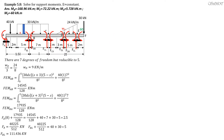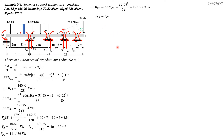For member BC, the load is end-to-end uniform, so we use the formula WL squared over 12. Fixed end moment BC equals fixed end moment CB equals 30 times 7 squared over 12, which equals 122.5 kilonewton meter. The fixed end forces FDR and FCL equal one half of 7 times 30, giving 105 kilonewtons.